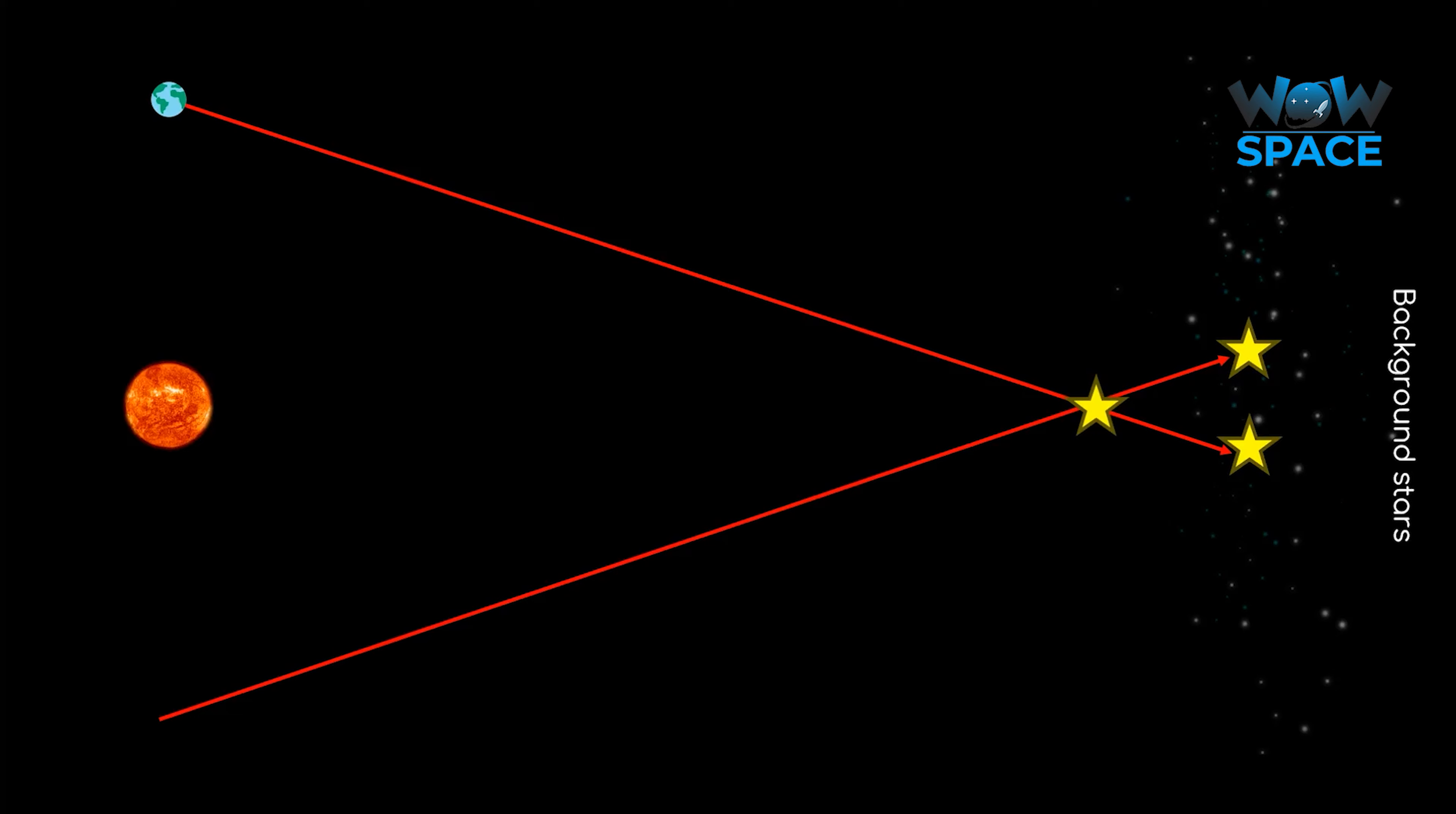This method works up until about a distance of 400 light years, as beyond that the change in its apparent motion can't be measured anymore. Earth's orbit would have to be a lot bigger before you could use this method for farther distances. Which is unfortunate, because most things in space are further than 400 light years away from us.